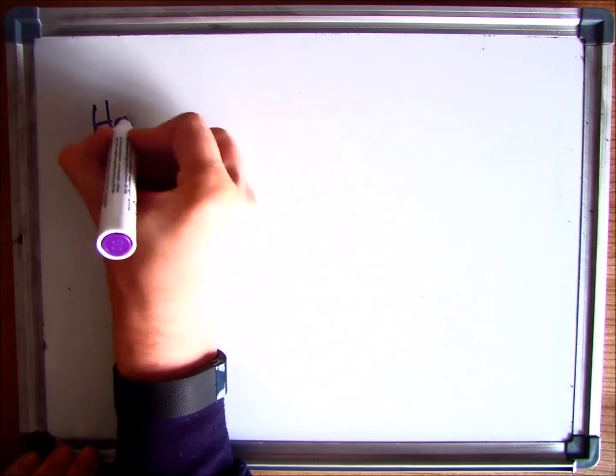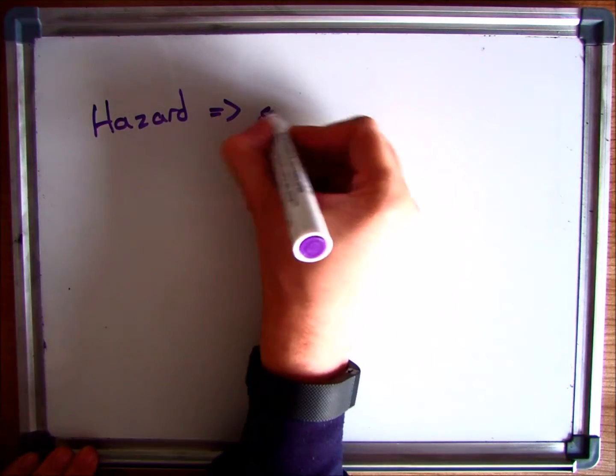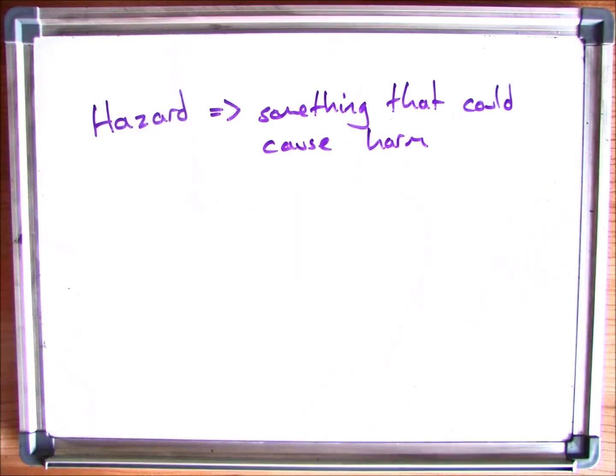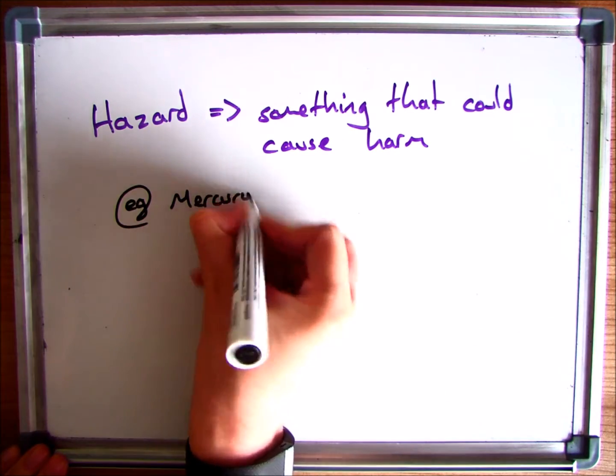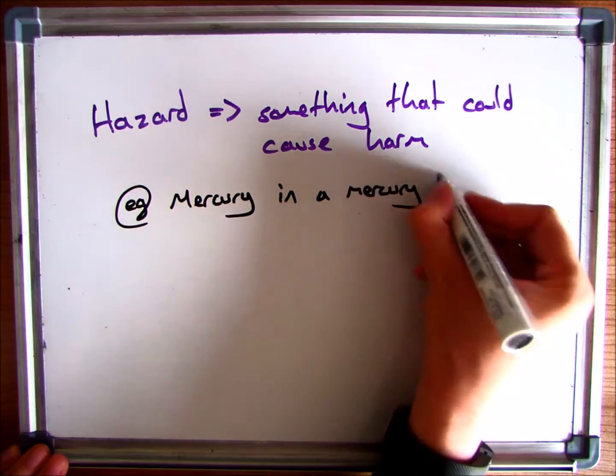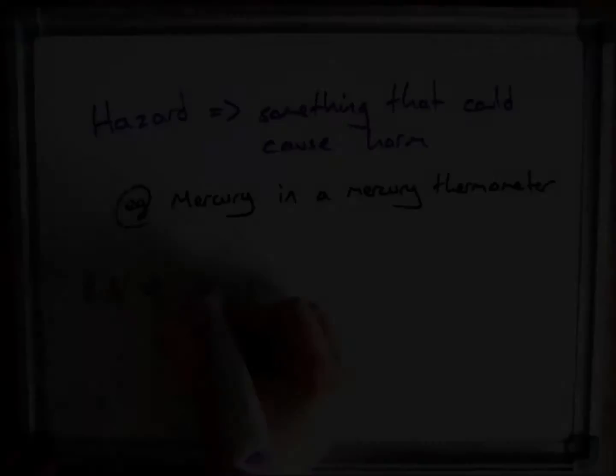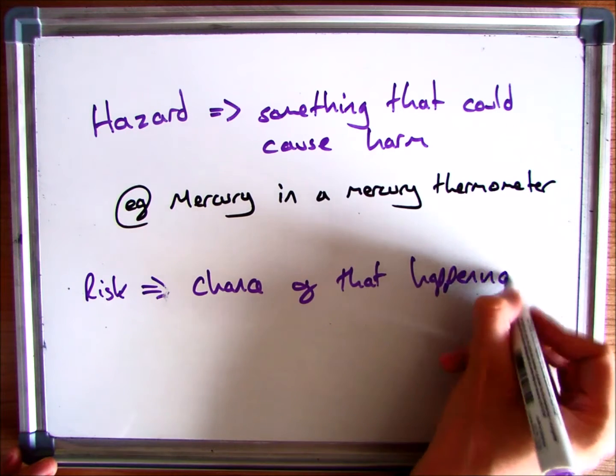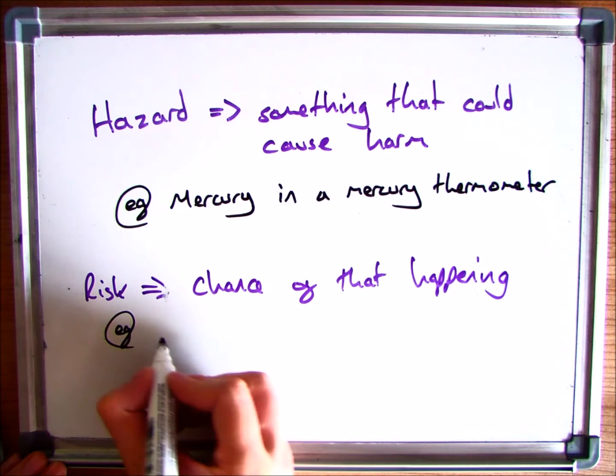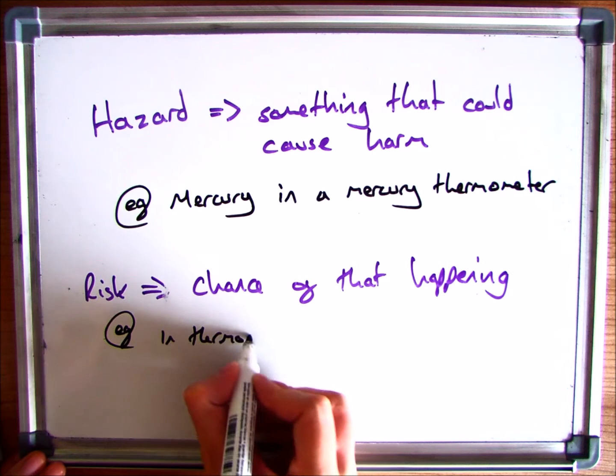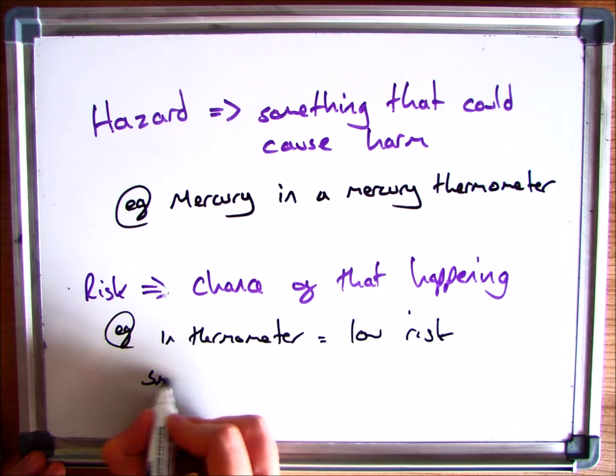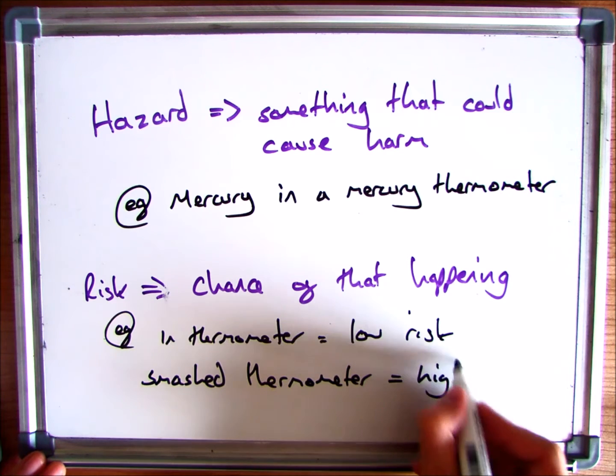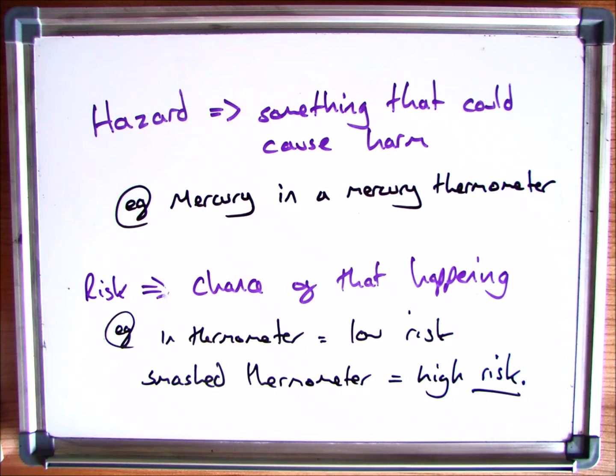And then the final two key words are hazard and risk. If we start off with hazard, that is something that could cause harm. For example, mercury in a thermometer is a really poisonous, really dangerous chemical. The risk on the other hand is the chance that that could cause harm. When you've got mercury inside the thermometer there's a very little chance of that causing actual damage. However, if you were to drop the thermometer and break it, there's now a high risk and a high chance that it can cause damage.